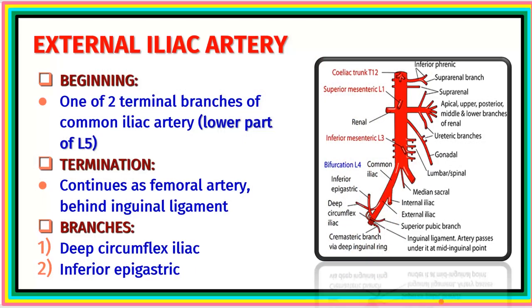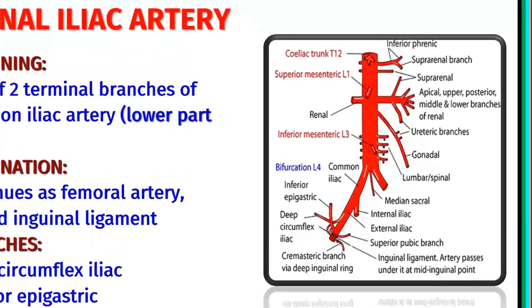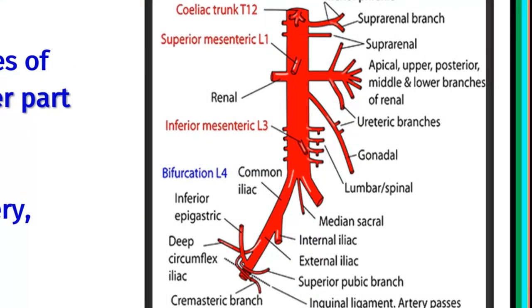The external iliac artery is one of the two terminal branches of the common iliac artery. It runs distally and terminates as the femoral artery at the point behind the inguinal ligament. It gives two branches: the inferior epigastric artery and the deep circumflex iliac artery.